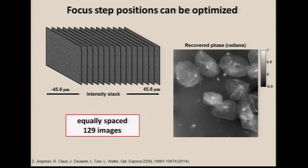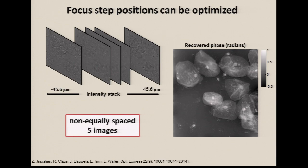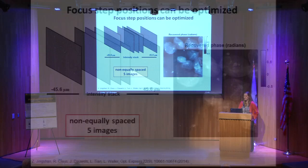The next piece: if you want to follow Nyquist rules you should take a lot of images to get a good phase result across all spatial frequencies. But actually we don't need that. If we take nonlinear focus steps, we can achieve these limits with only five images. The answer from the math is that they should be exponentially spaced, making it much quicker to collect the data.